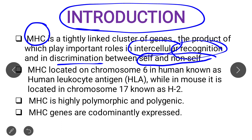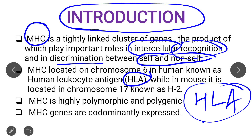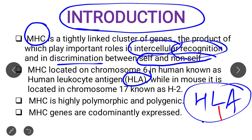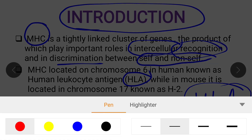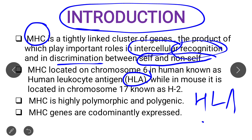In humans, MHC is called HLA. What is HLA? HLA stands for Human Leukocyte Antigen, and it is present on human chromosome number 6. While in mouse, the MHC is known as H2, and in mouse it is present on chromosome number 17. Please note this down.